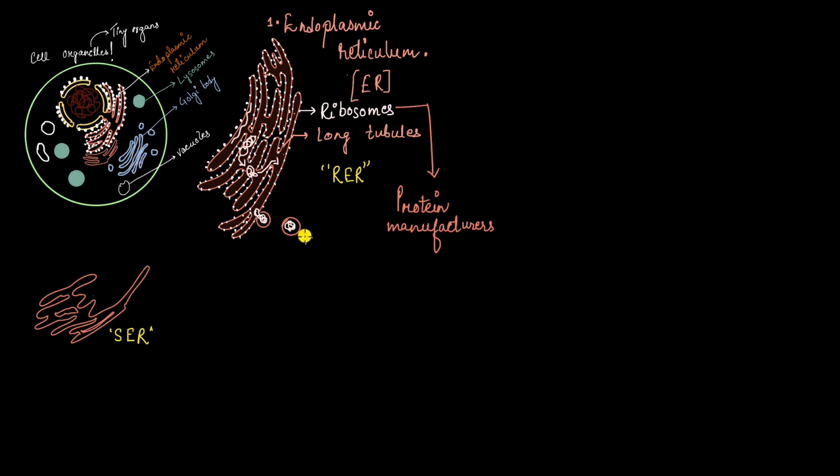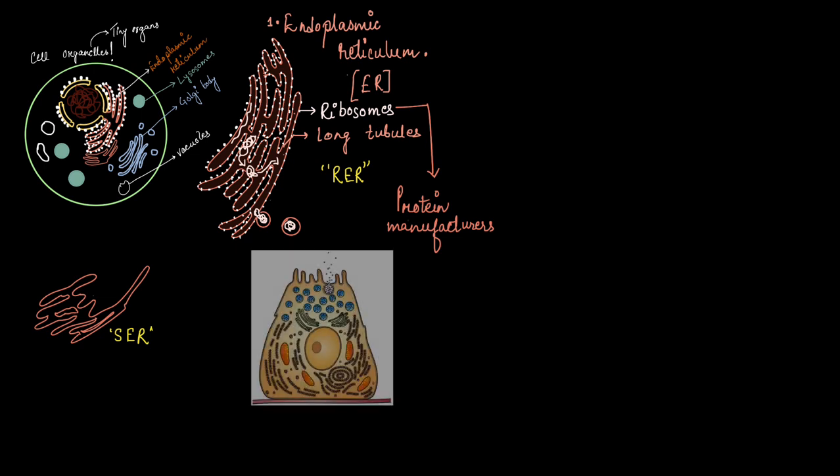So, basically all it does inside a cell is protein production. So, any part of your body demanding more protein will have cells with more RER in them. For example, if we talk about the digestive enzyme producing cells in your stomach that releases enzyme to digest your food, it will have a lot of RER in them because enzymes are mostly proteins, right?